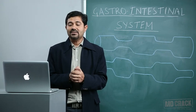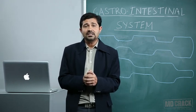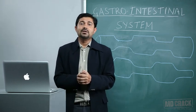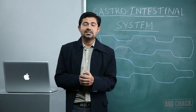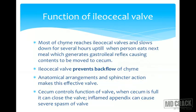Secretin and glucagon inhibit small intestinal motility. You have to remember that secretin is more synthesized when the duodenum and upper small intestine are exposed to the acidic chyme. Once sufficient digestion and absorption has taken place, the chyme is moved up to the end of the ileum.